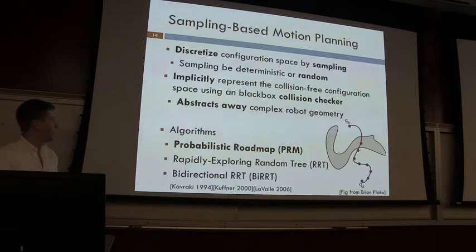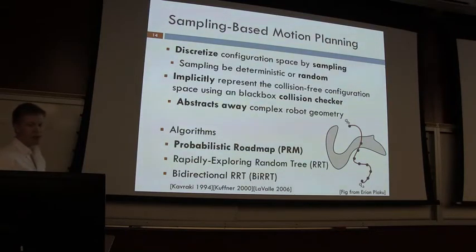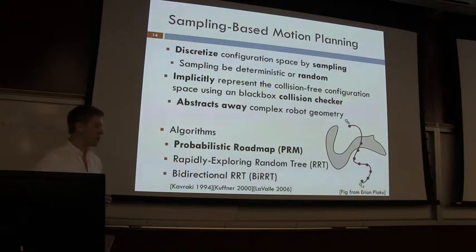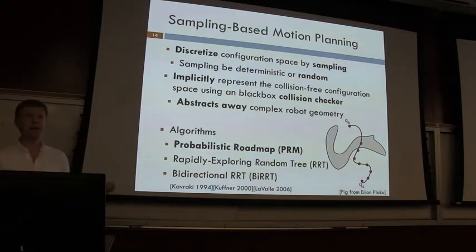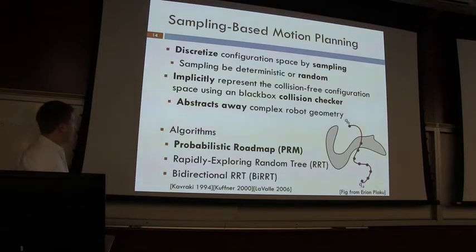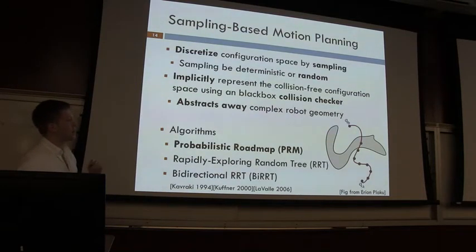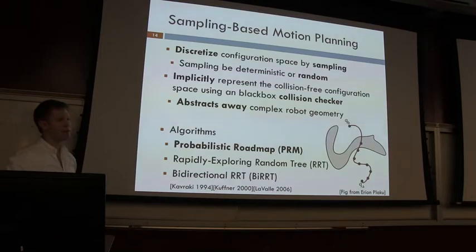Sampling-based motion planning leverages this by discretizing the configuration space through uniform random or deterministic sampling, then implicitly representing the collision-free configuration space by calling a collision checker such as ODE or FCL. This abstracts away scene geometry entirely — your algorithm only needs to compute whether a configuration is in collision. To check whether a path between two configurations is safe, you step along it incrementally; if any point hits a collision, that connection is unsafe.